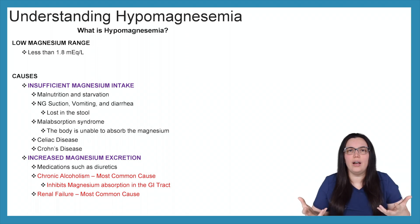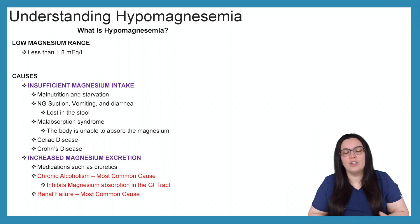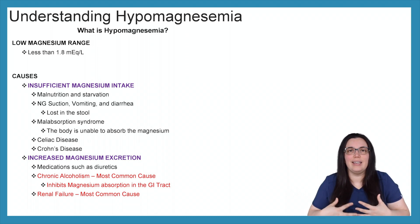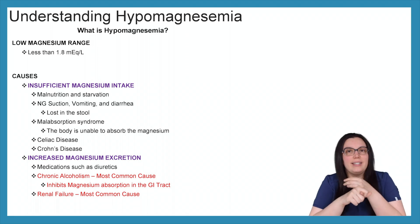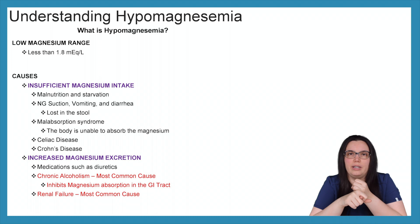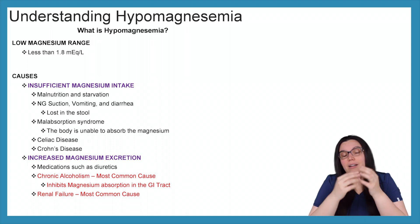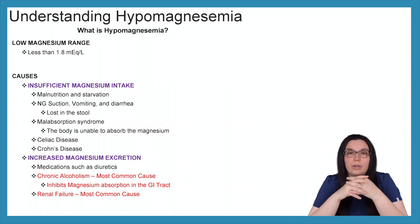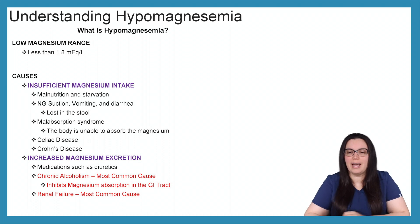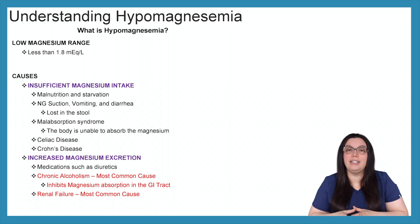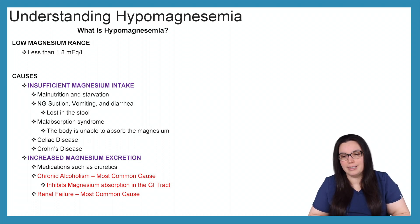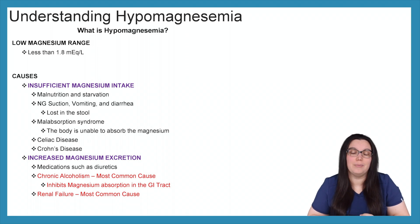There are quite a few causes of hypomagnesemia, starting with insufficient magnesium intake. With malnutrition and starvation patients, they're not getting any magnesium in, leading to low serum magnesium levels. NG suctioning really disrupts all electrolytes, so you need to monitor patients on continuous NG suctioning. Vomiting and diarrhea cause magnesium loss through the stool. Malabsorption syndrome is the body's inability to absorb magnesium, and celiac disease and Crohn's disease can also cause magnesium losses.